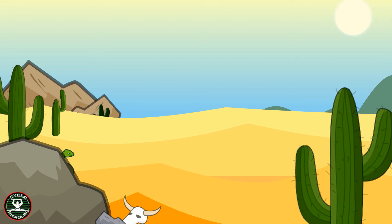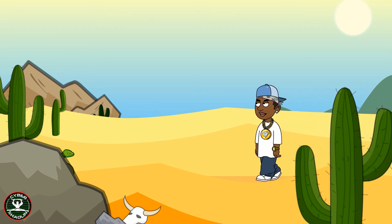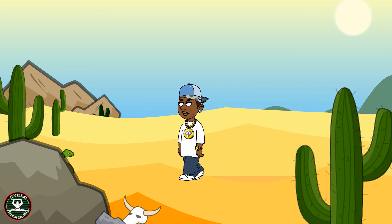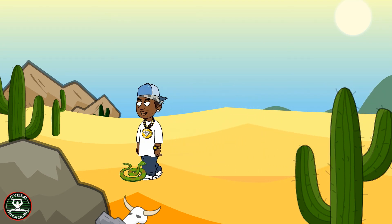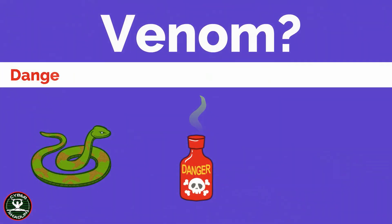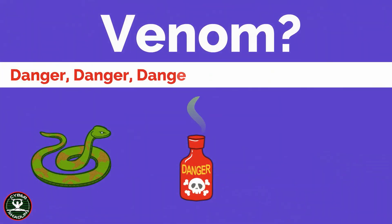Let me try and explain this with a simple example. My friend Jackson is walking in the desert when suddenly he gets bitten by a snake. He is rushed to the hospital where the doctor checks for venom in his blood. So what is venom made up of?